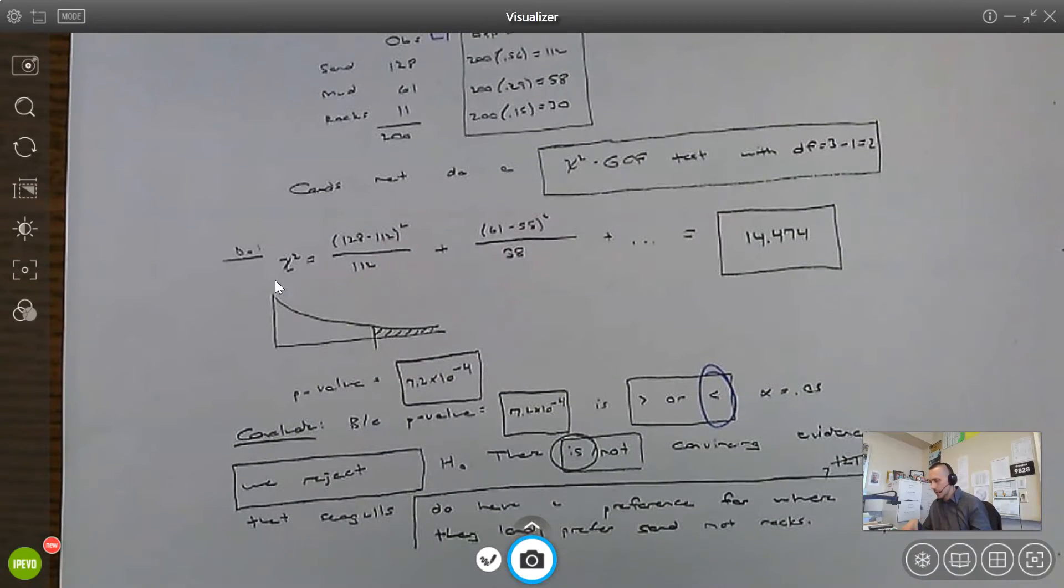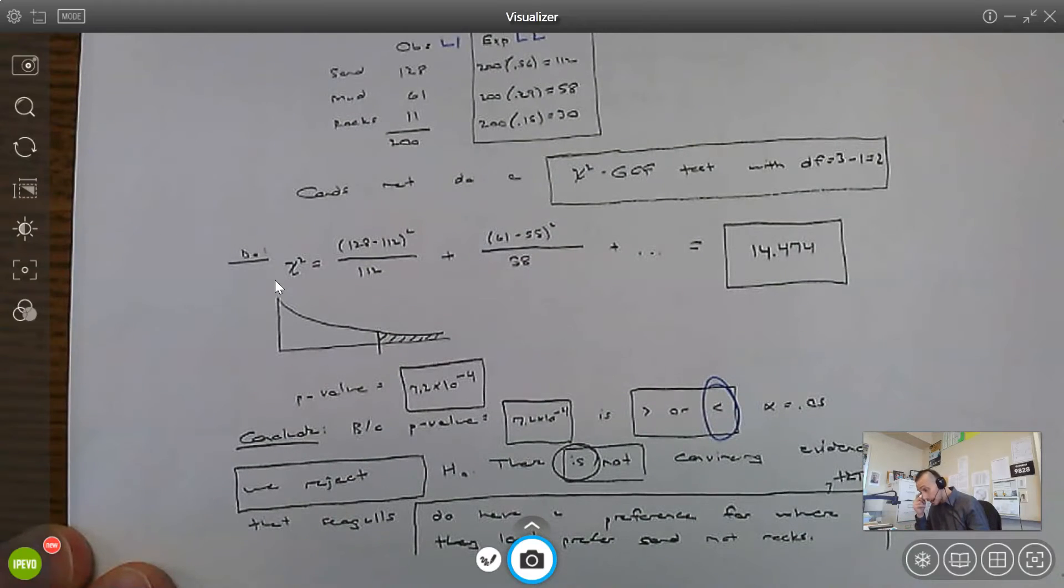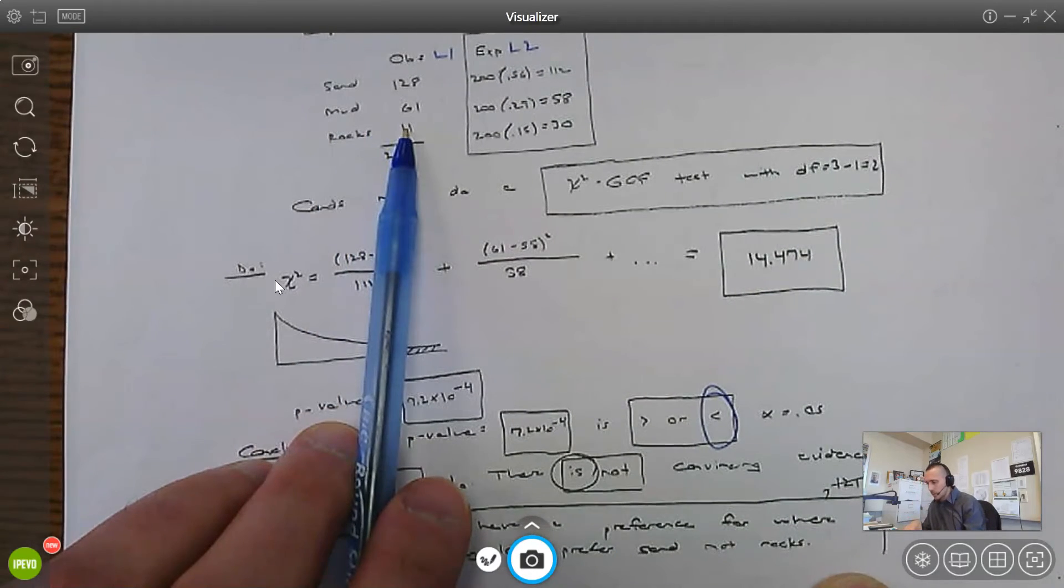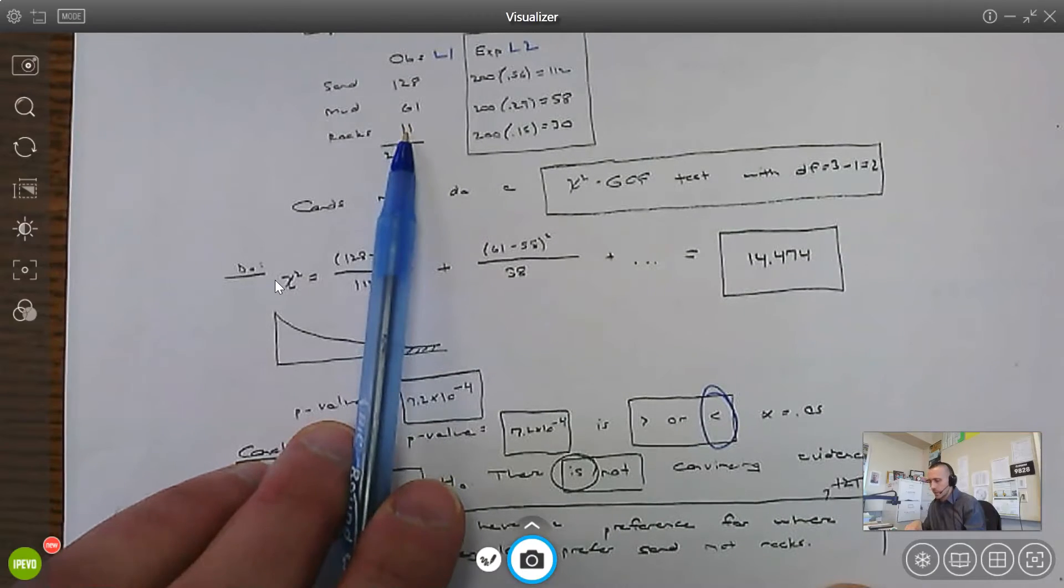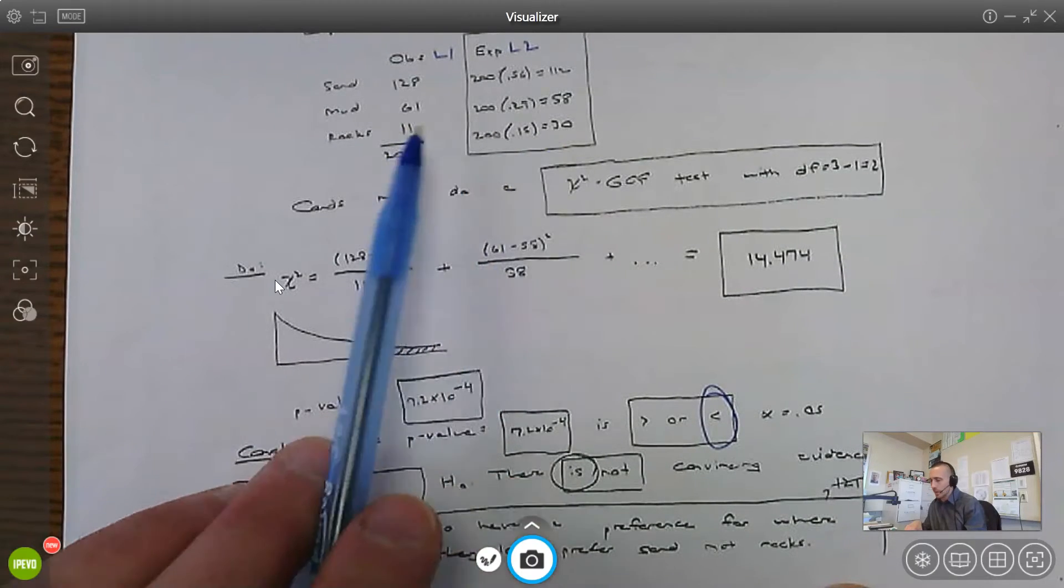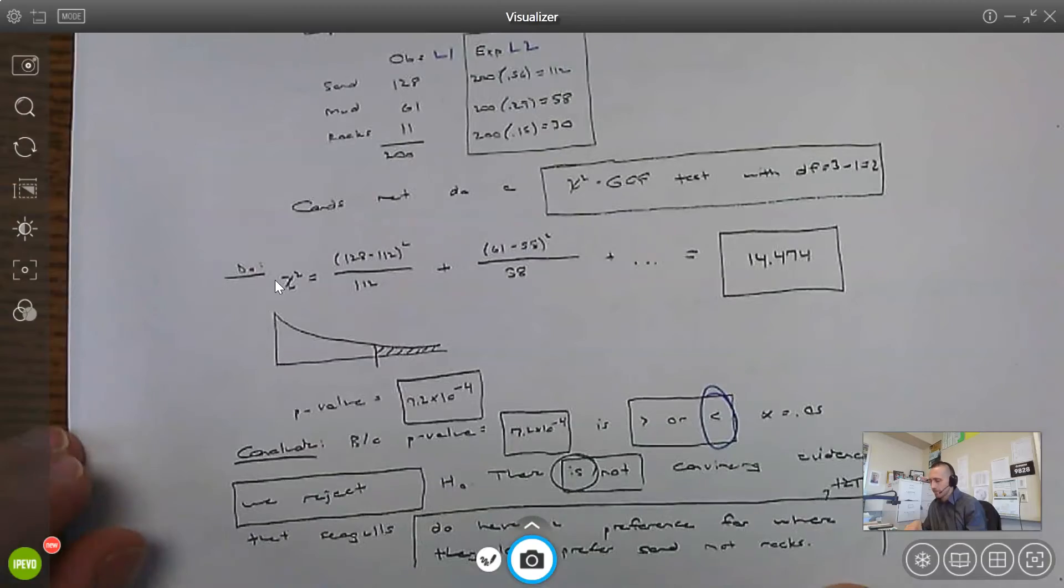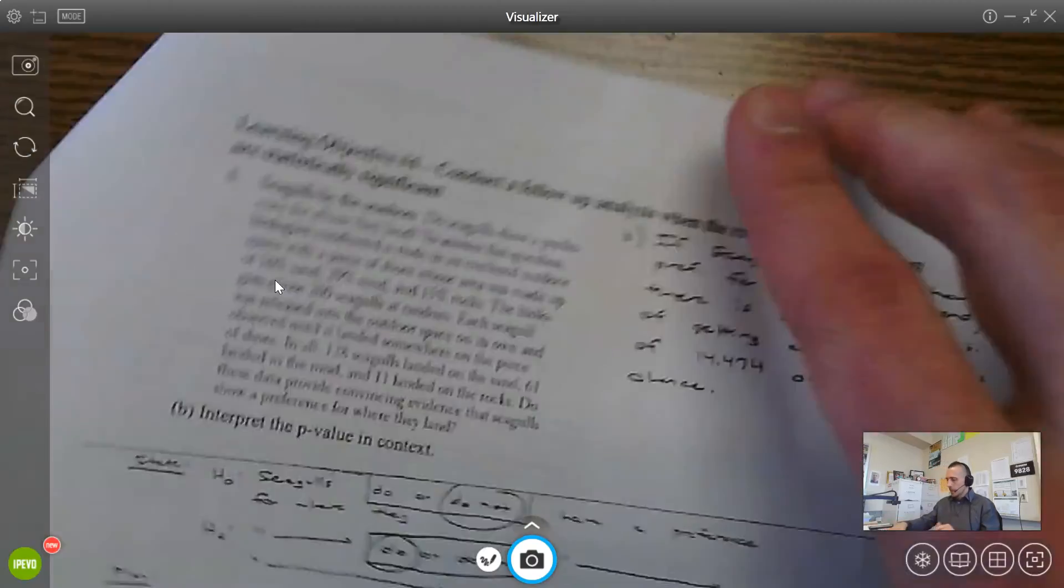Follow-up analysis, the biggest contribution to the chi-squared value is the rocks. I don't know what it is. I didn't write it down. There's a lot less seagulls that landed on the rocks than we expected. 11 versus 30. Okay. So that's page seven.